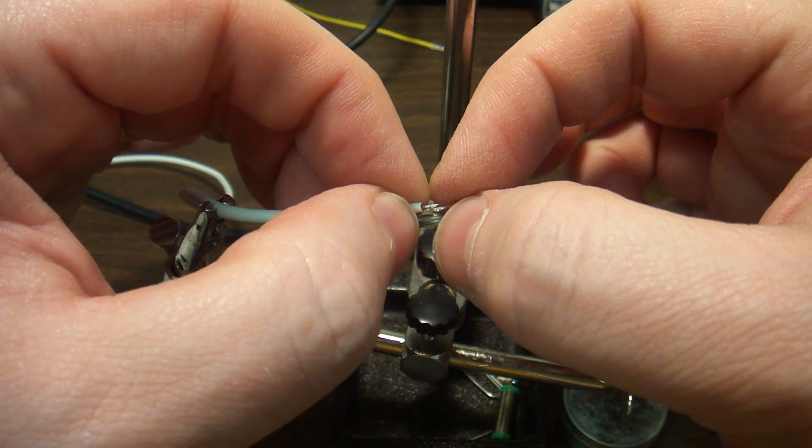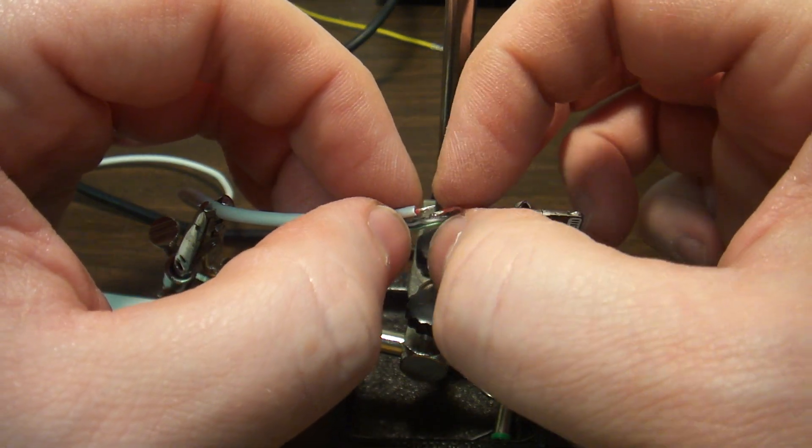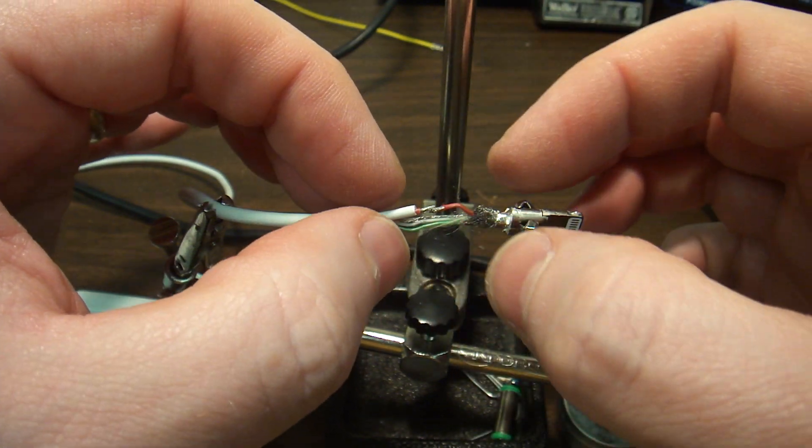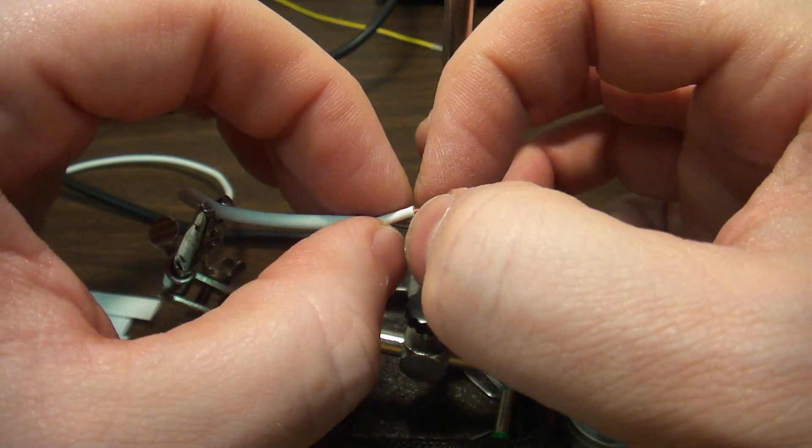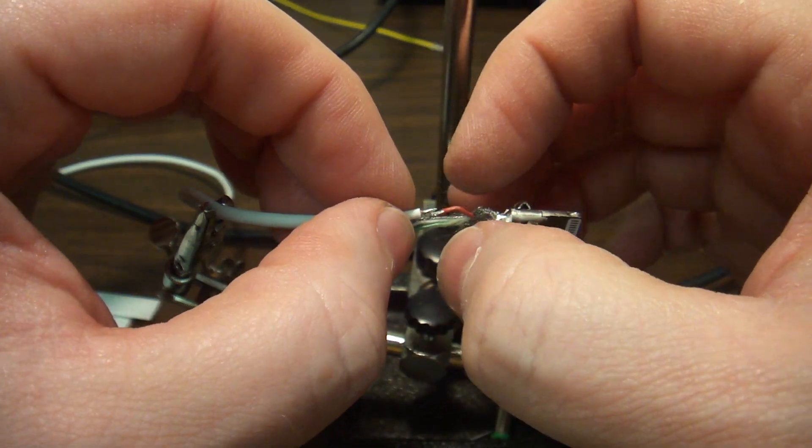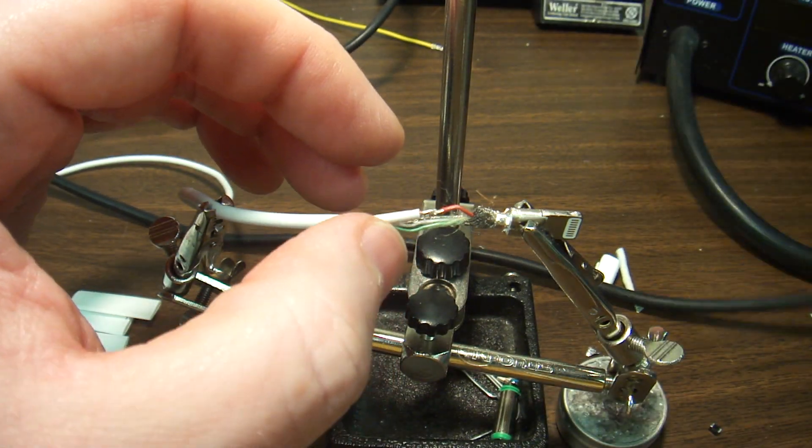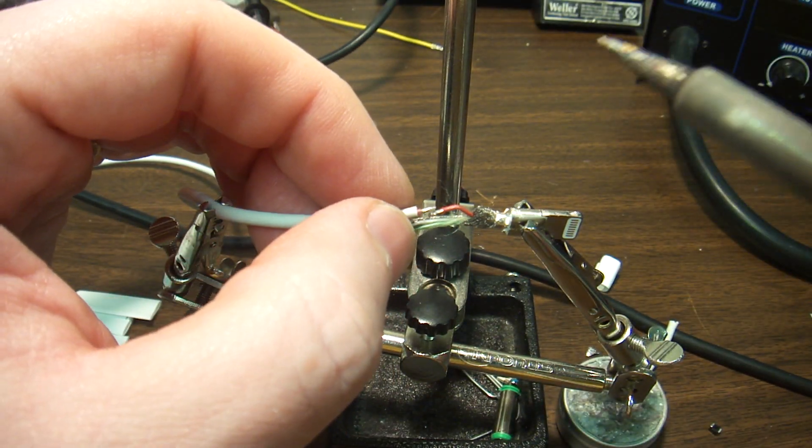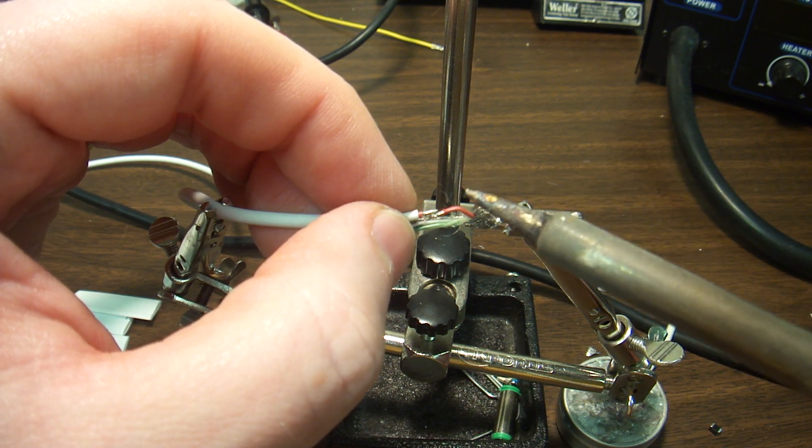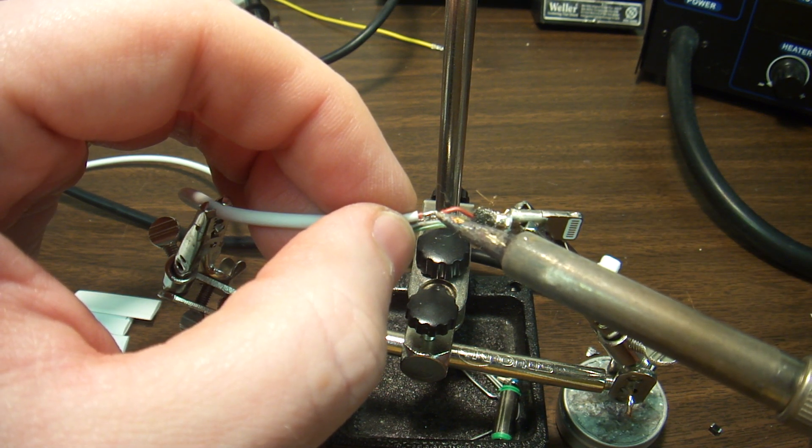I have to work quickly here because the shrink tubing does not like heat. If I put my soldering iron on too long, it will warm up the wire and shrink my tube.